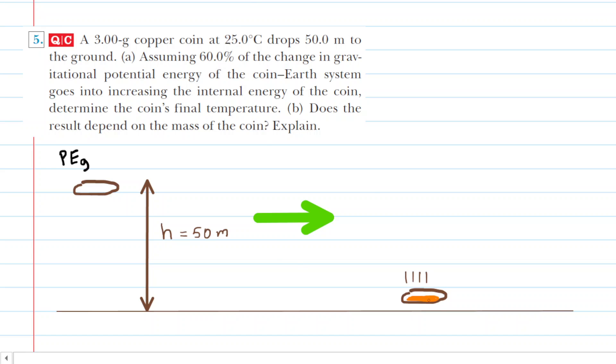It goes into thermal energy, or at least a portion of it does. The question notes that 60% of the initial energy is converted into thermal energy. We've indicated that the coin heats up with an orange color, and we can denote that thermal energy with the letter Q.